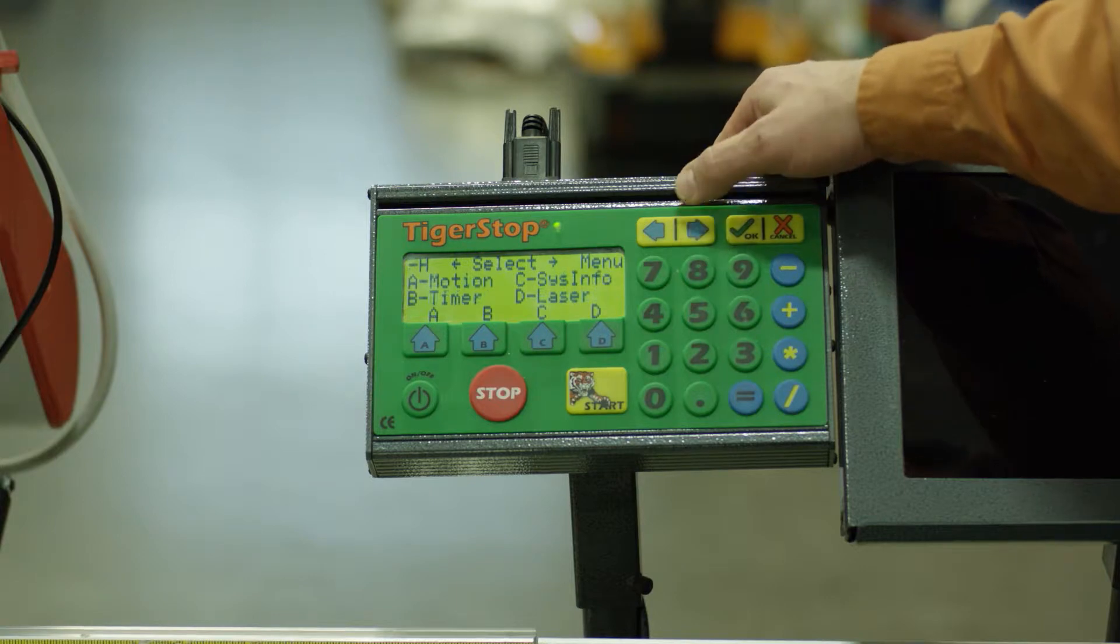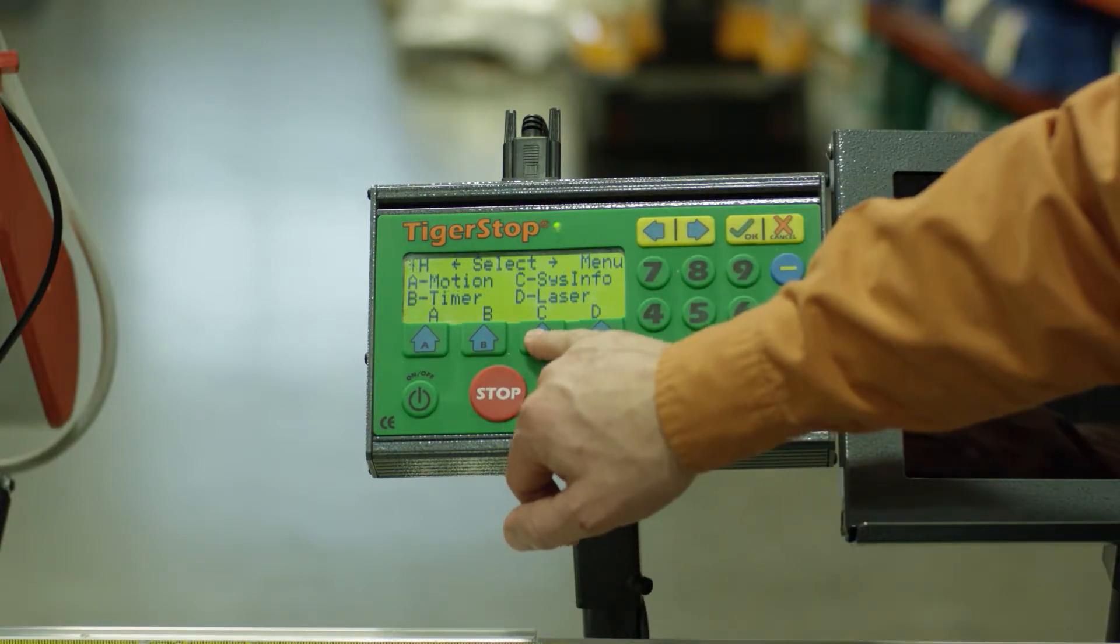We're going to press the right blue arrow. Go into system information so we'll press C.